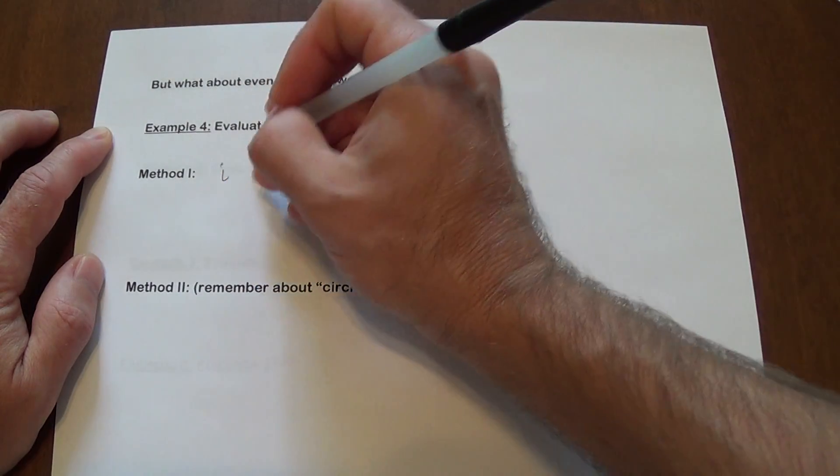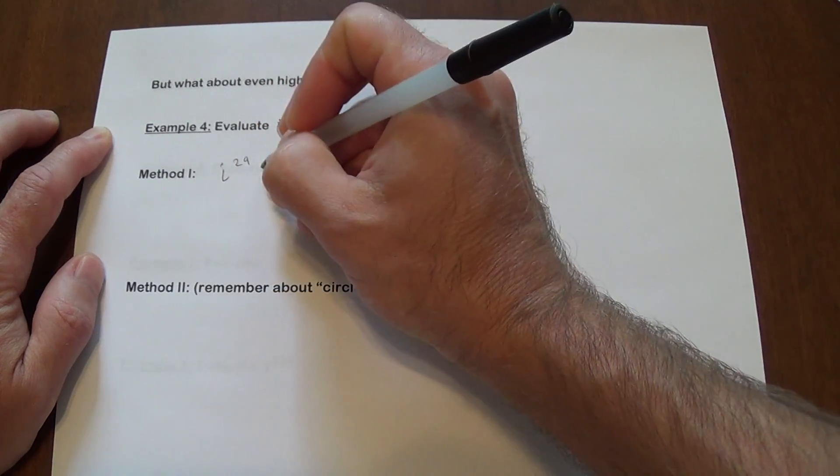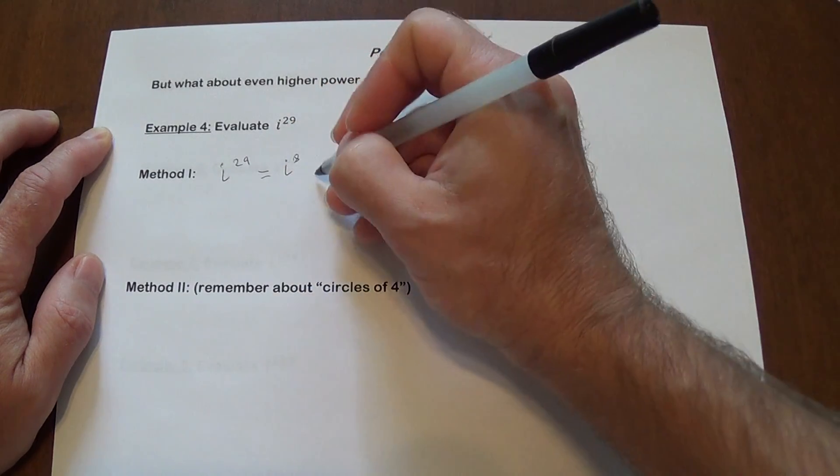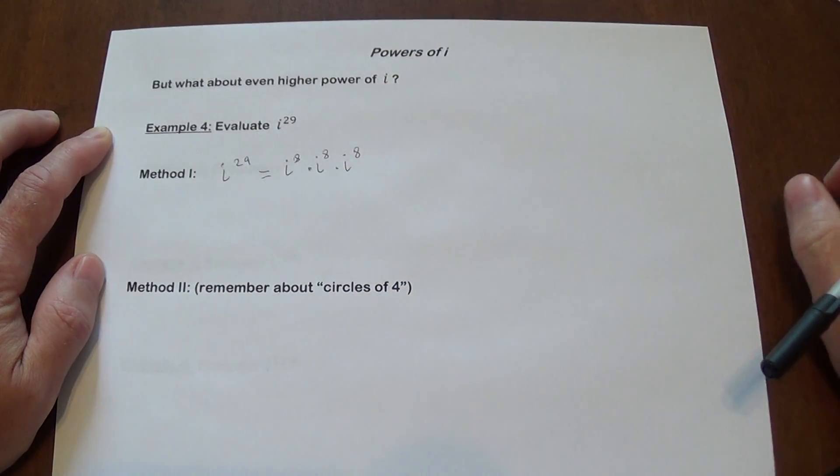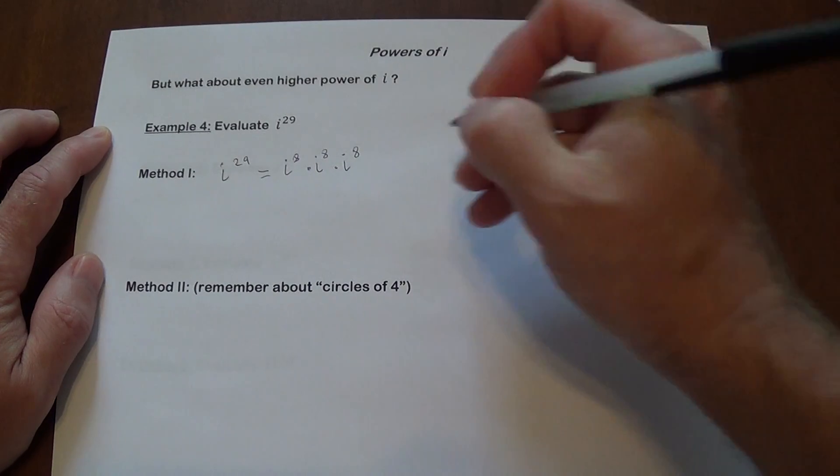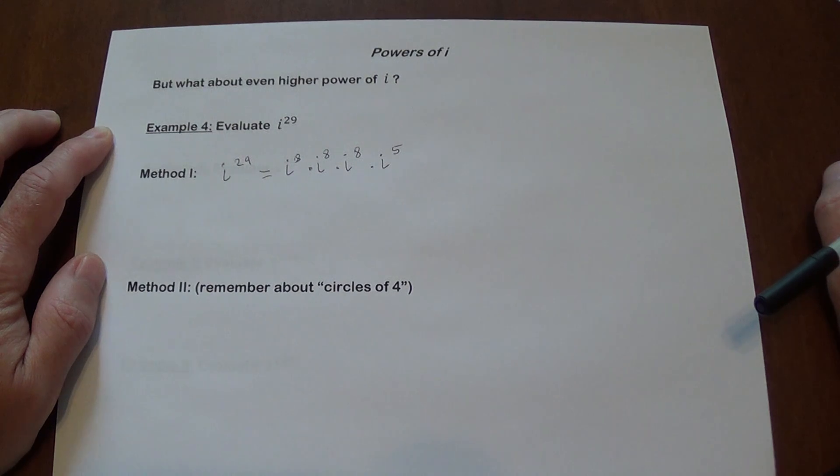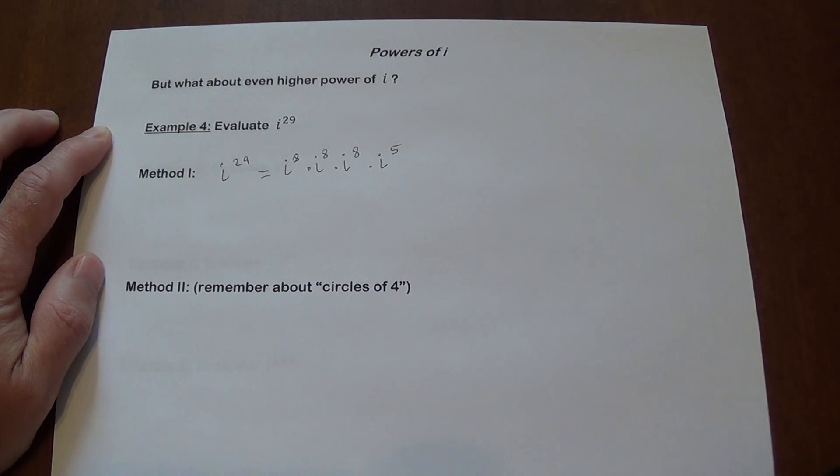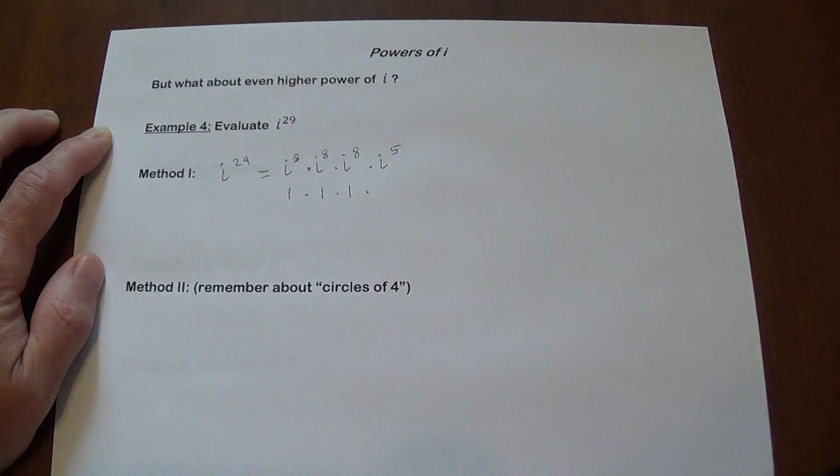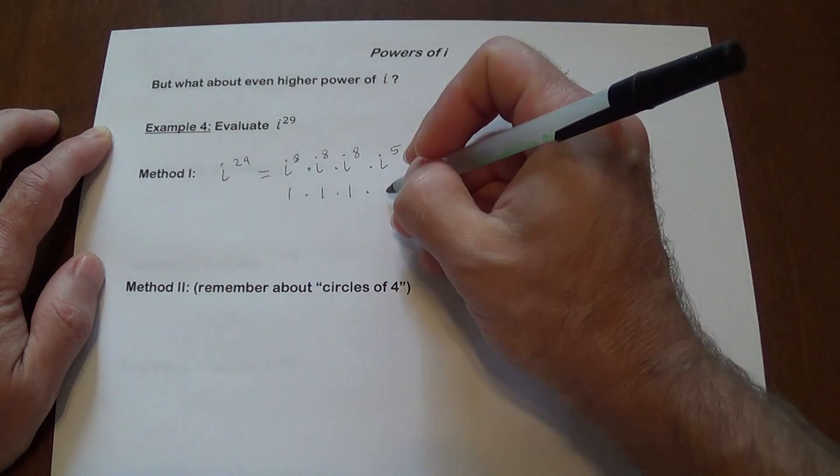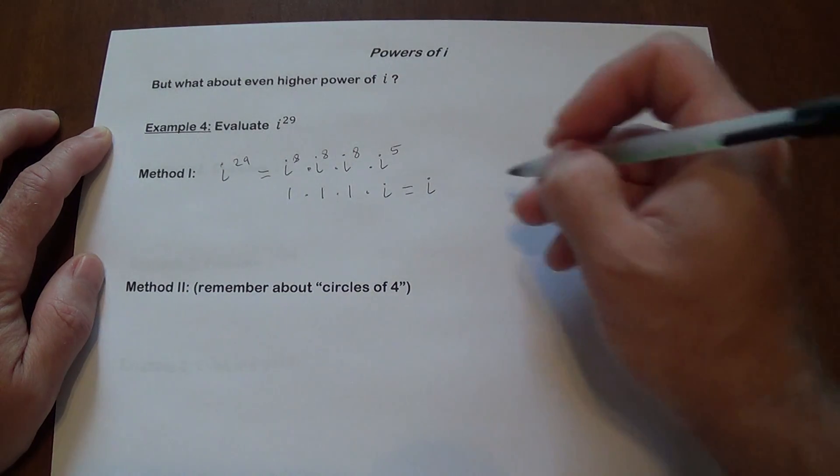Since we went up to eight on one of the previous pages, we're going to say, I can use i to the eighth. Let's maximize it. Times another i to the eighth. That gives me 16. Times another i to the eighth. Eight plus eight plus eight is 24. So I need five more. i to the fifth. Eight plus eight plus eight plus five will give us 29. i to the eighth, as we know, this is one. This is one. This is one. And i to the fifth, if you refer back to that previous page, is i. And the answer is i. That's it.